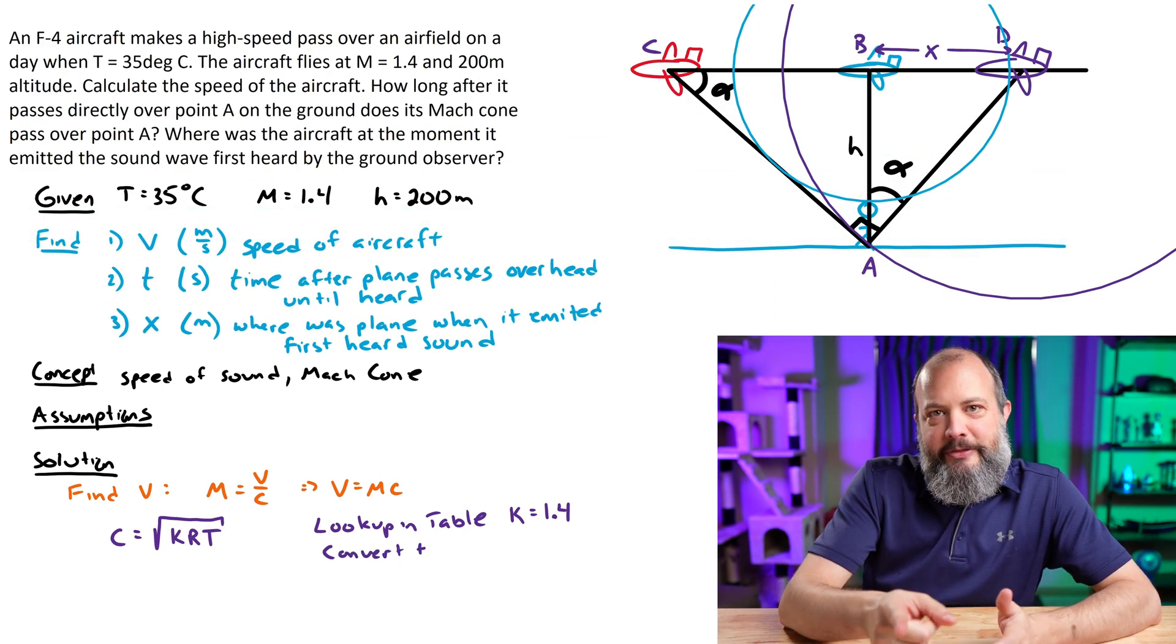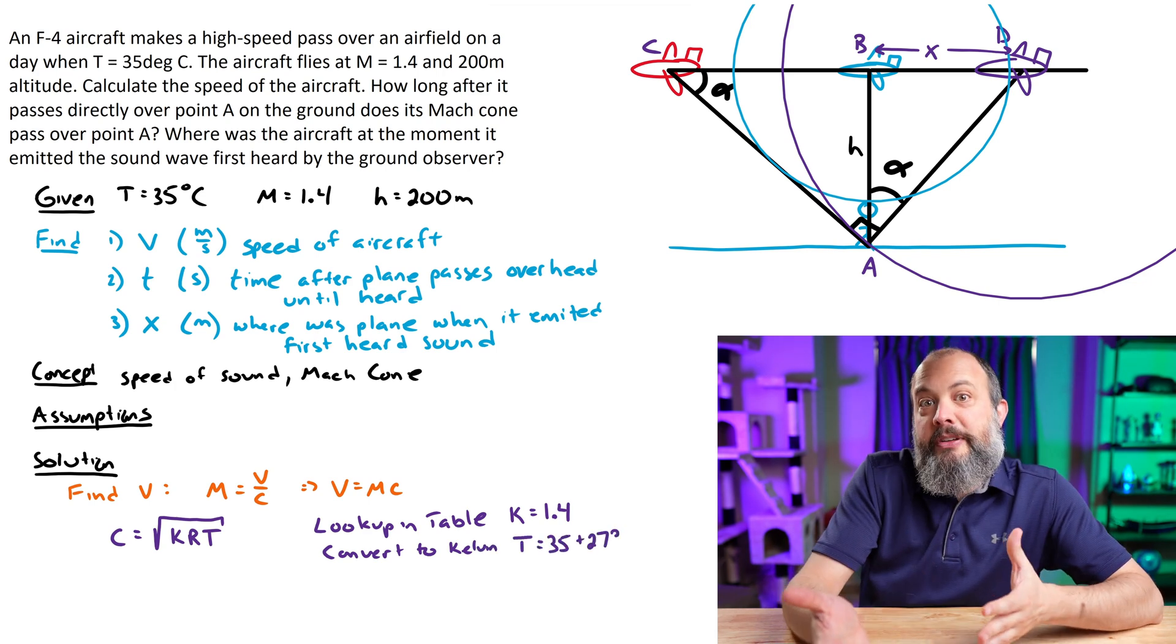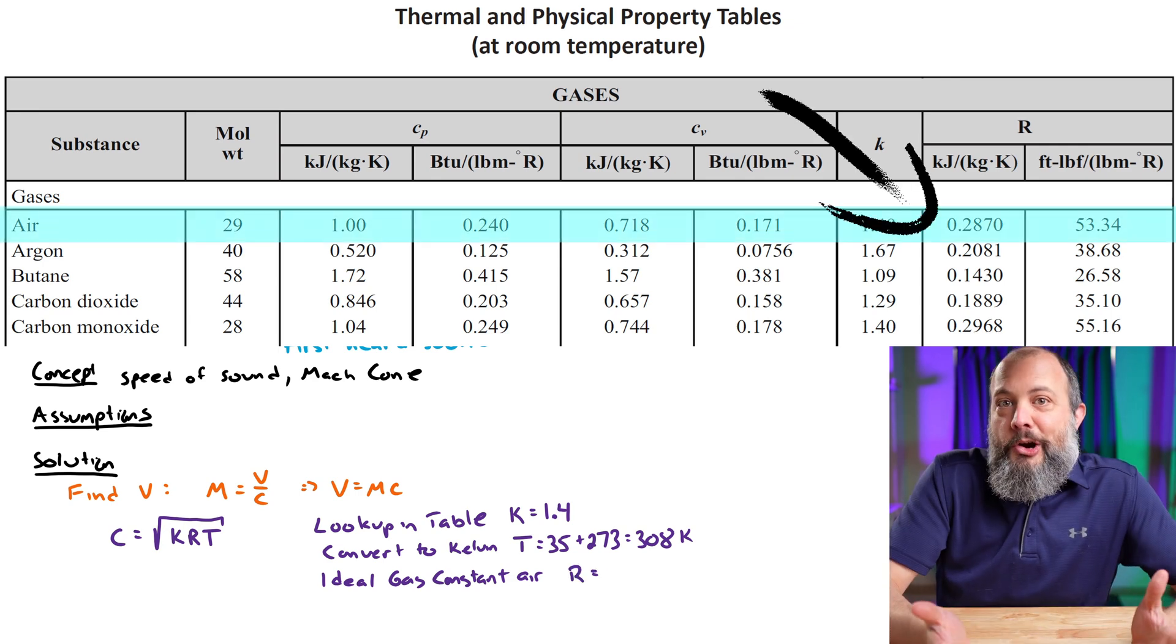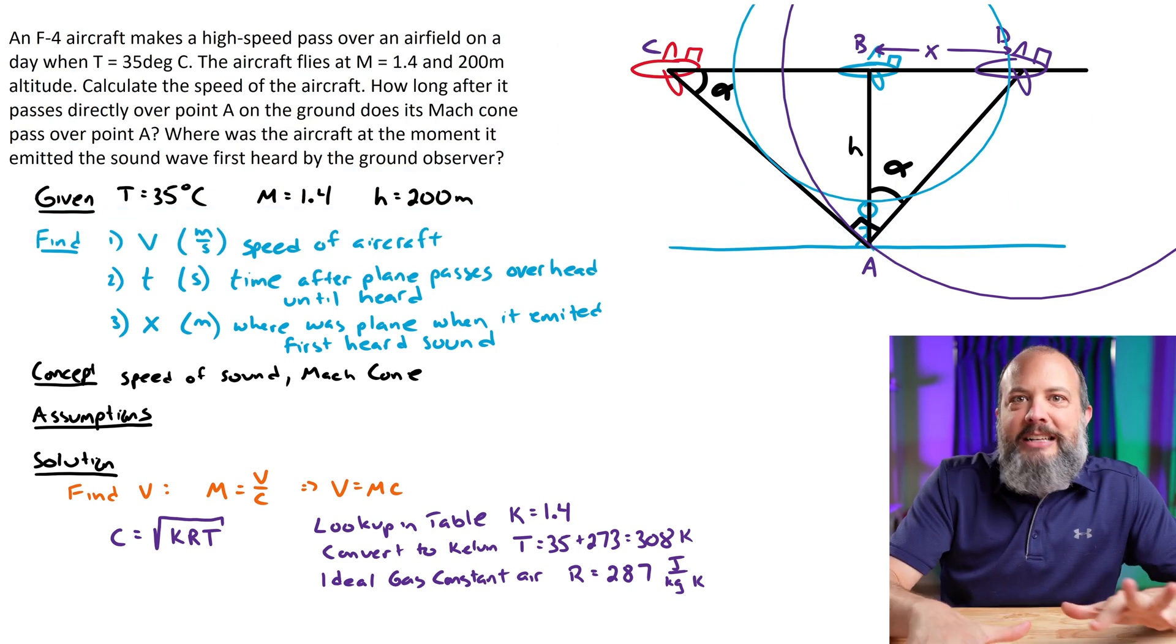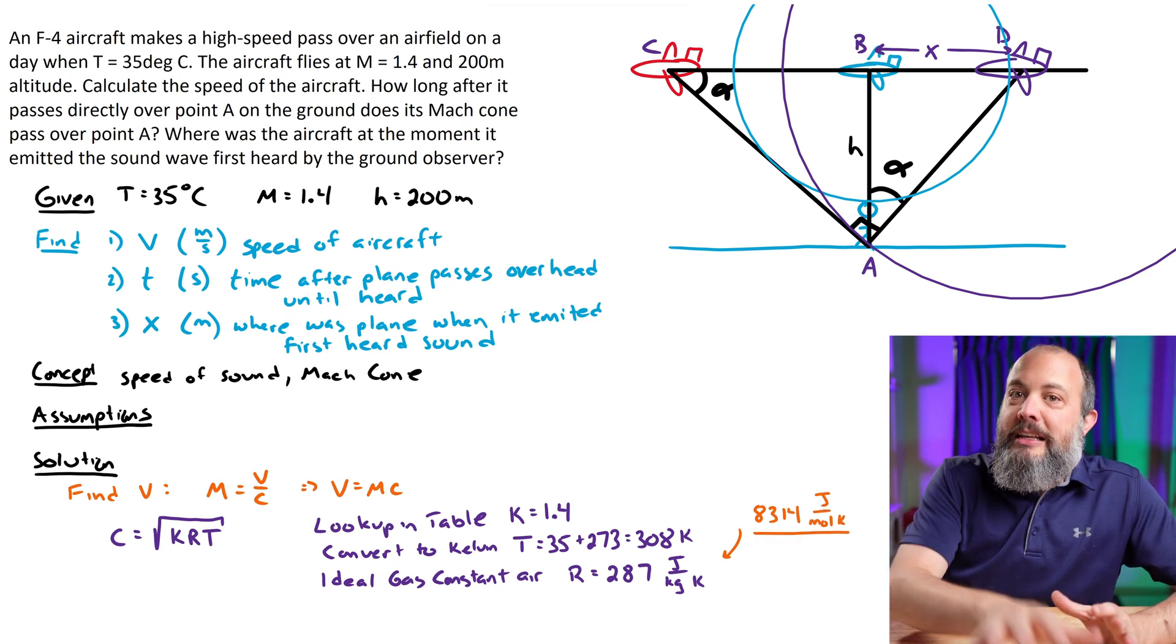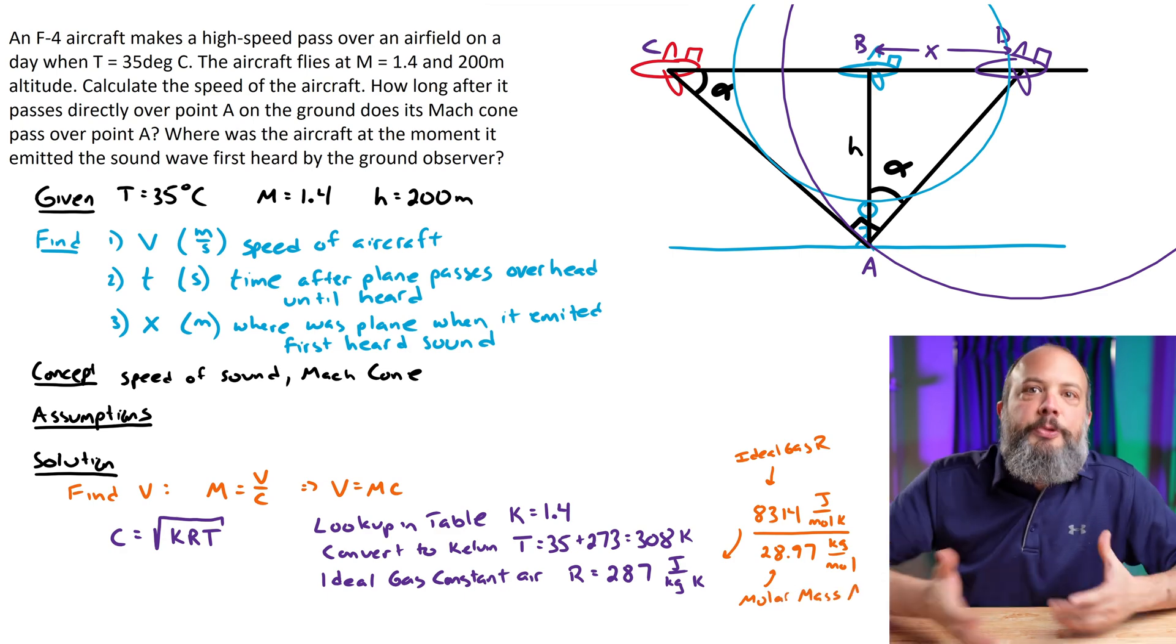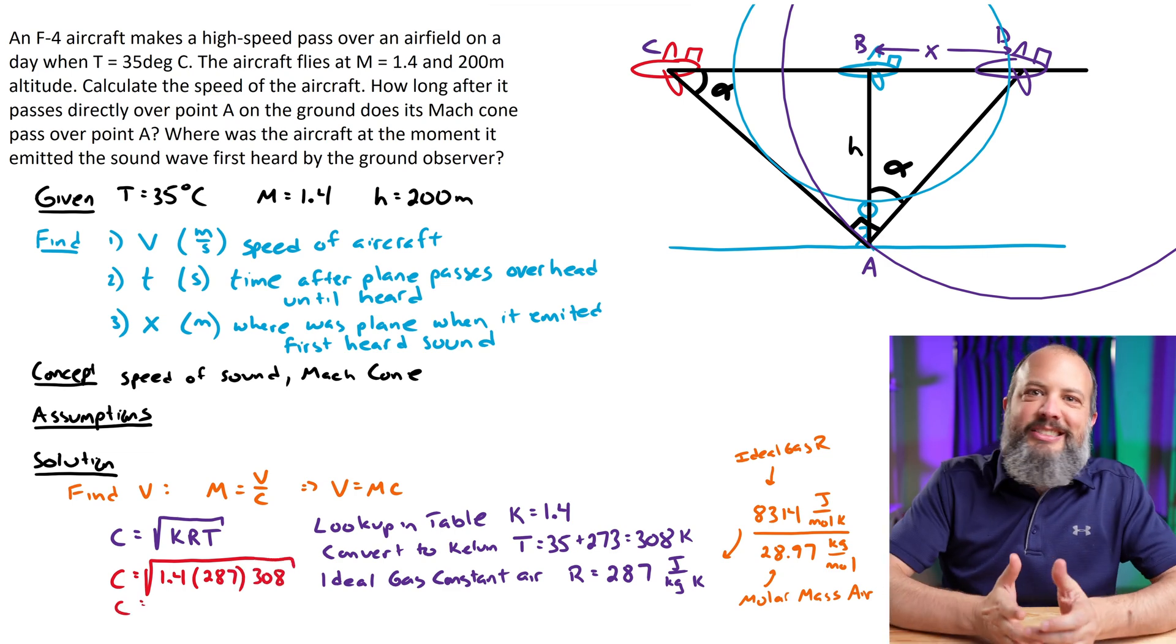Temperature has to be in Kelvin. Remember, anytime you're multiplying or dividing by temperature, you need to be using an absolute scale. R is the ideal gas constant. You can probably just look up the value for R for air and get 287 joules per kilogram Kelvin. But if you find the generic ideal gas law constant, 8314 joules per mole Kelvin, you can get the value we need by dividing by the molar mass of air, 28.97 kilograms per mole. When you divide this through, you get the 287 value. Multiply this through, we get about 352 meters per second as the speed of sound.